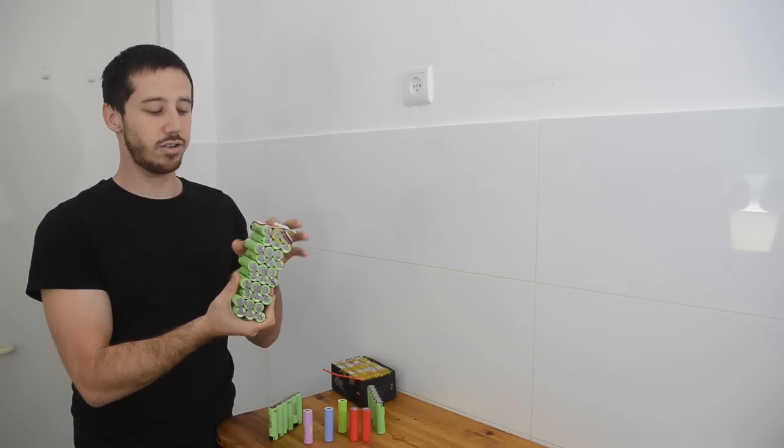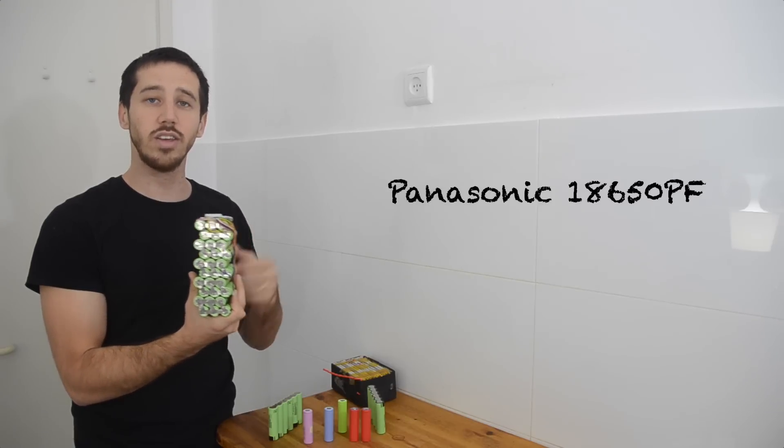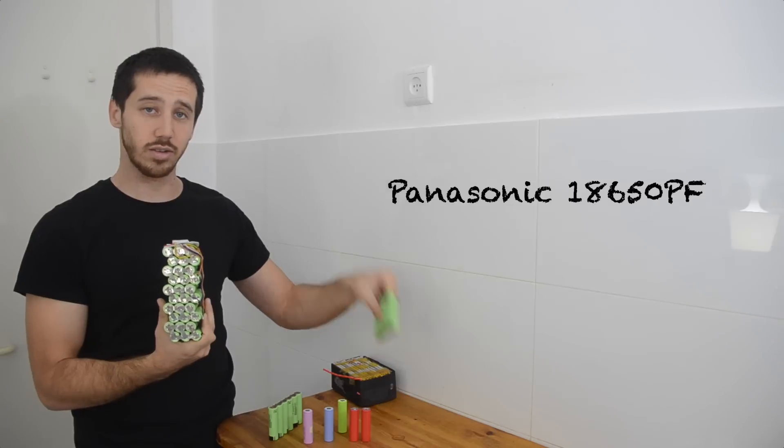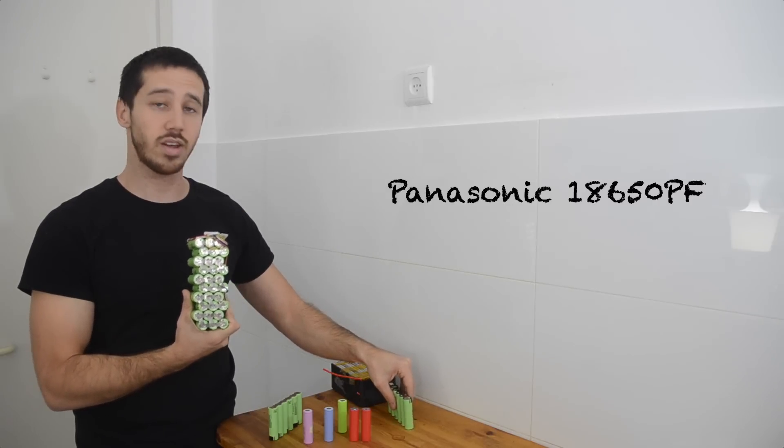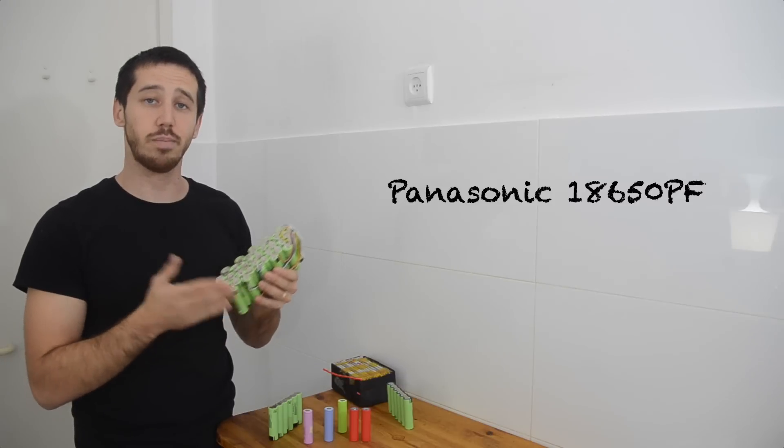This pack here is created with Panasonic 18650PF cells. So these don't have as much capacity as the B cells. These only have 2.9 amp hours but each one can handle up to 10 amps. So it's sort of a trade-off between power and capacity.